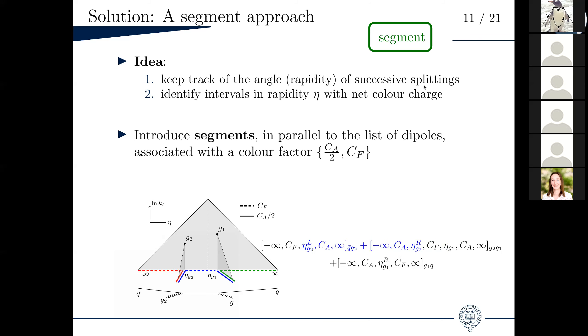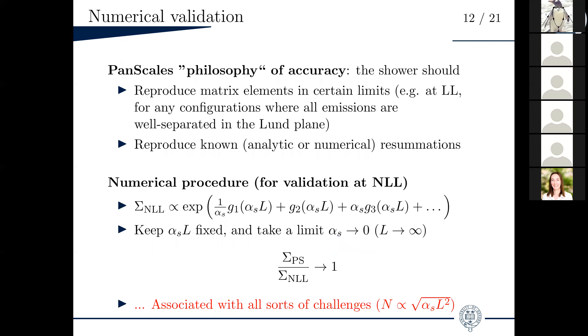This scheme, this solution that we introduced, I will call segments in the following. I will show you comparisons basically to dedicated resummations. So how do we validate things in PanScales? This is actually quite an ordeal. Our philosophy of accuracy is the following. The showers should reproduce the exact matrix elements in certain limits. So for soft and collinear limits, basically. That's fixed, that's what we call fixed order tests. But it should also reproduce known dedicated resummations, whether they are analytic or numerical. In a set limit, and I won't go into too many details here, but I will show you the plots and I'm happy to discuss in the questions bit.